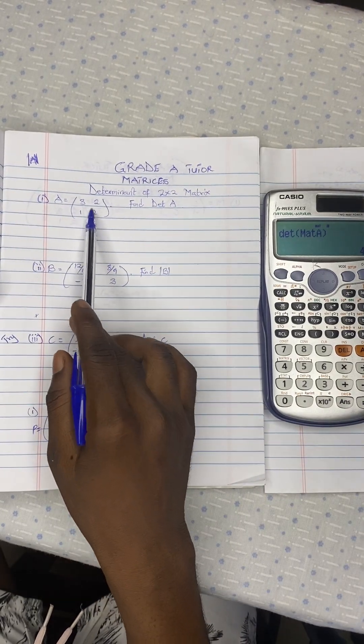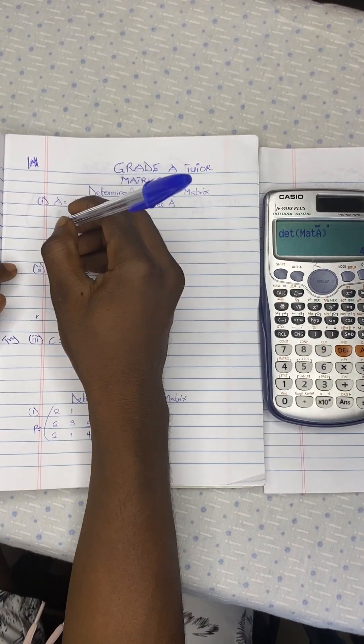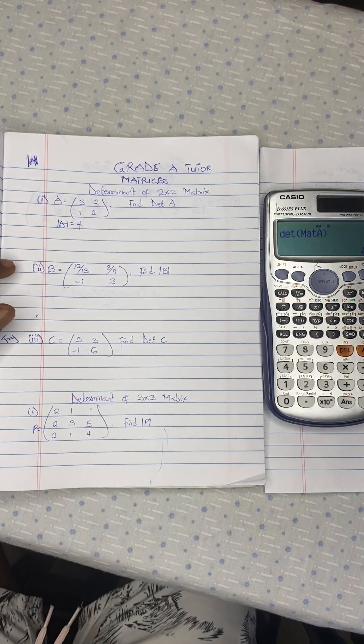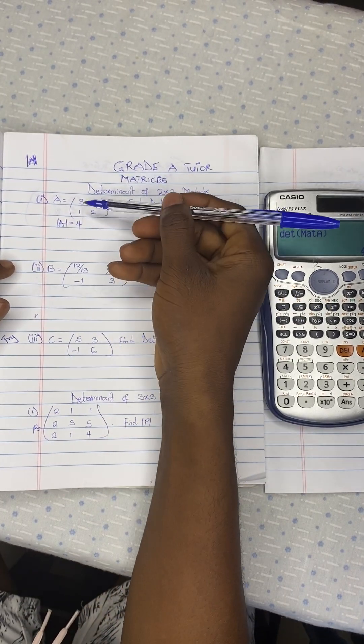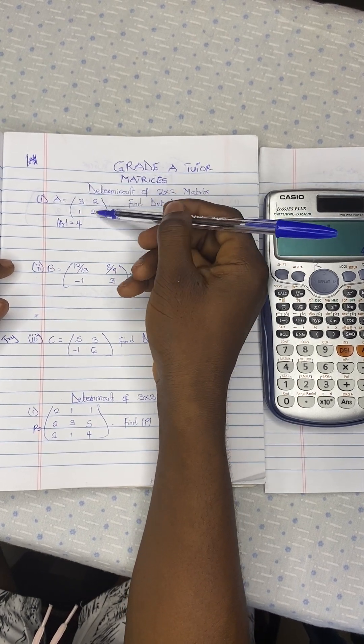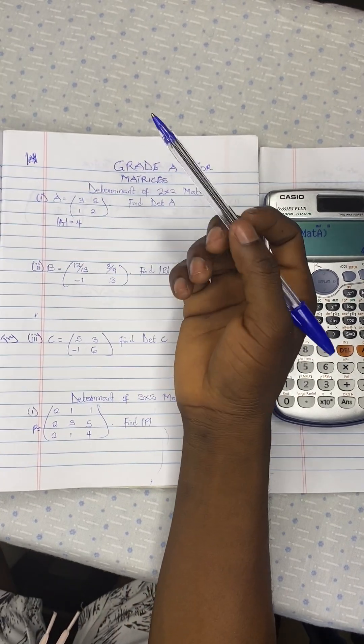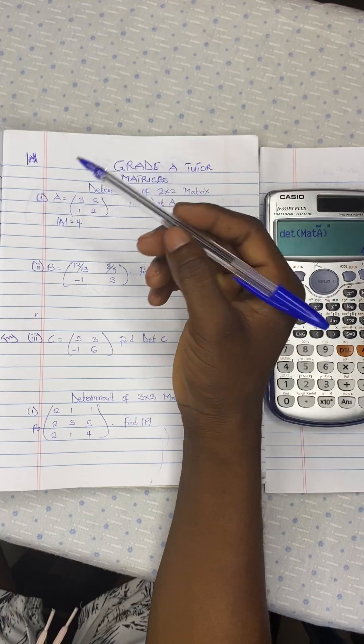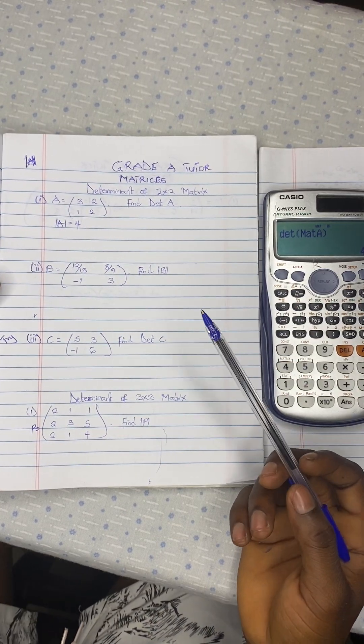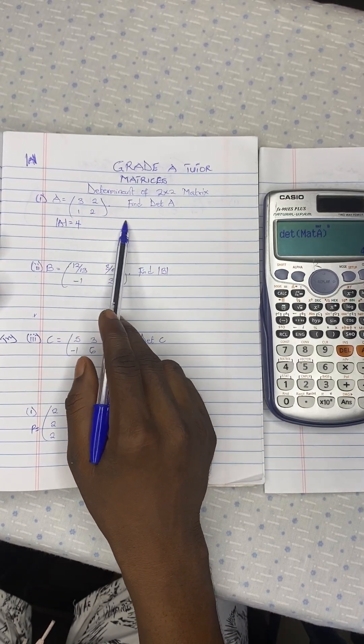So it means when you calculate for the determinant, you are going to get 4. So your determinant of A is equal to 4. It is the same as 3 times 2 is 6 minus 1 times 2 is 2. So 6 minus 2 is 4. Yes, sometimes you can get high figures and all that. So that one, you would need the calculator in order to solve it within the shortest possible time. Okay. So we are done with the first one.